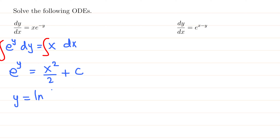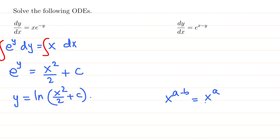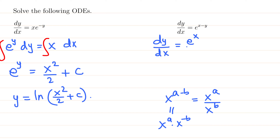For the next ODE, we rewrite the expression using the exponent rule: x raised to (a minus b) equals x raised to a over x raised to b, or equivalently x raised to a times x raised to negative b. So the equation becomes dy/dx equals e raised to x over e raised to y, i.e., dy/dx equals e^(x−y).